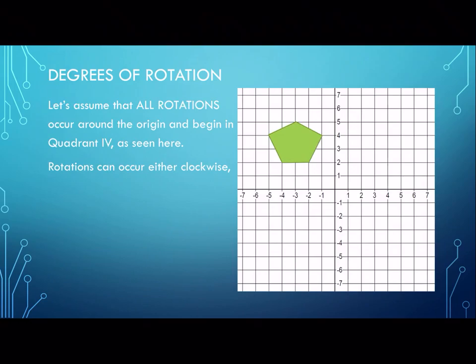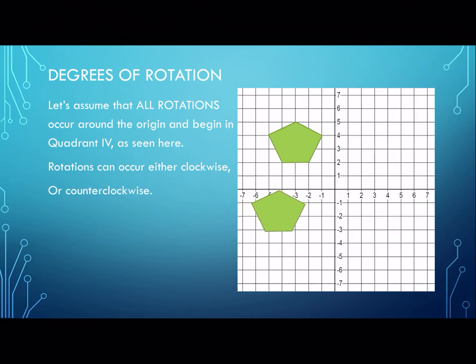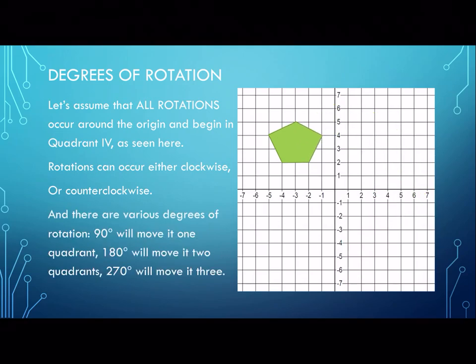We're going to begin in quadrant two. You can see that the shape can go either clockwise or counterclockwise. There are various degrees of rotation.